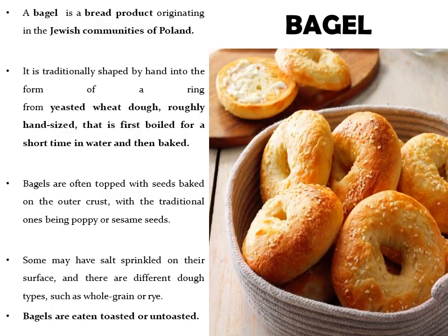On number ten, we have bagel. A bagel is a bread product originating in the Jewish communities of Poland. It is traditionally shaped by hand into the form of a ring from yeasted wheat dough, roughly hen-sized, that is first boiled for a short time in water and then baked. Bagels are often topped with seeds on the outer crust, with traditional ones being poppy or sesame seeds. Some may have salt sprinkled on their surface, and there are different dough types such as whole grain or rye. Bagels can be eaten toasted or untoasted.